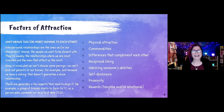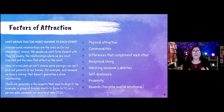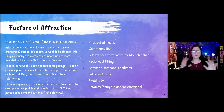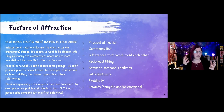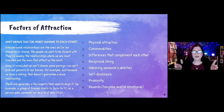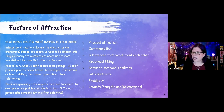Admiring someone's abilities. Think about ways that you talk about your closest people — a lot of times that will drift to, oh, they're an amazing painter. I had one friend who I admired. She was an event planner, and the ability to organize and put together weddings and fundraisers — I thought, this is a skill. So we admire someone's abilities.